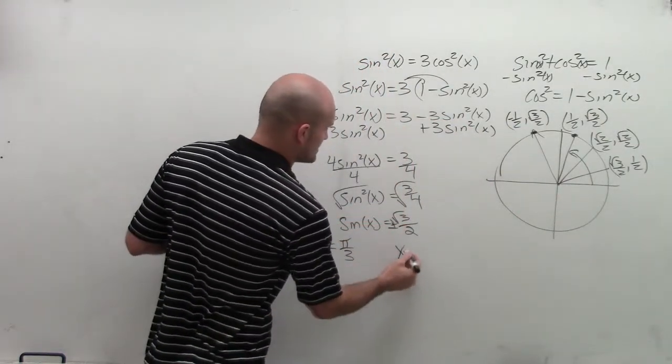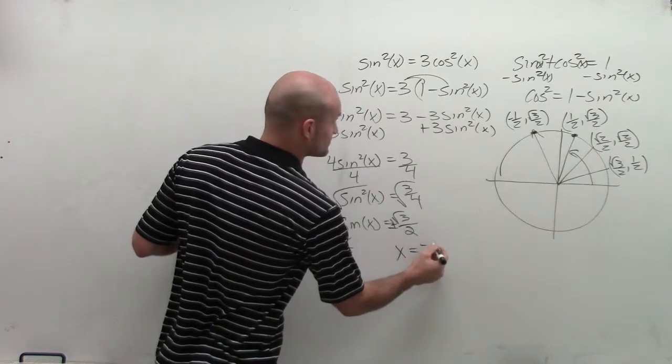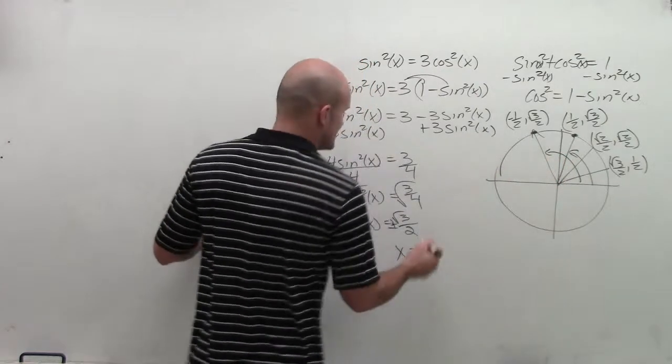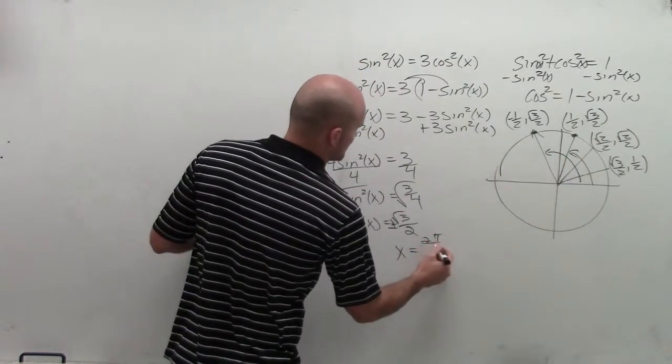So now I can say, well, x is also equal to, I'm sorry, not a negative. x is equal to at this angle, which here is now going to be 2 pi over 3.